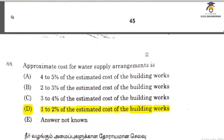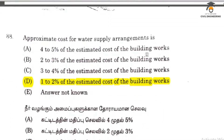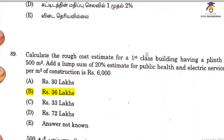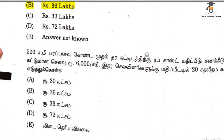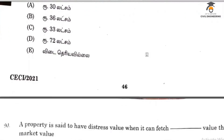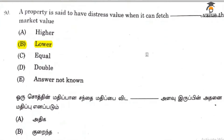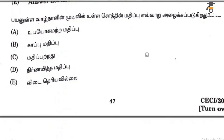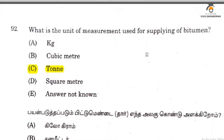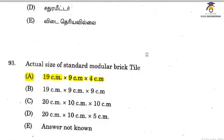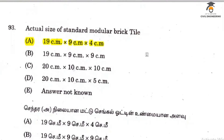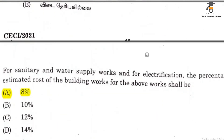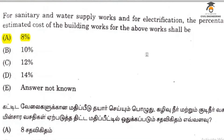Approximate cost for water supply arrangement is 1-2% of the estimated cost of the building work. Question 92 relates to salvage value. Question 92 also relates to the unit of measurement. Question 93 relates to brick size, which is 19 by 9 by 4, answer A. Sanitary and water supply is 8% of the building works.